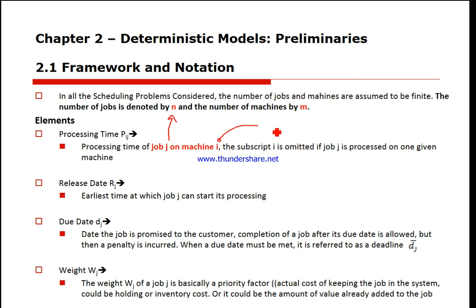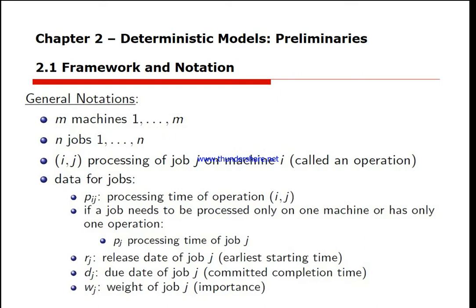Each machine is specific. We have the release date r_j of the job, the due date d_j of the job, and the weight w_j of the job. The weight is the cost of keeping a job in the system — it could be a holding cost, inventory cost, or a penalty incurred on the system. If a job needs to be processed only on one machine, instead of p_ij we just say p_j.